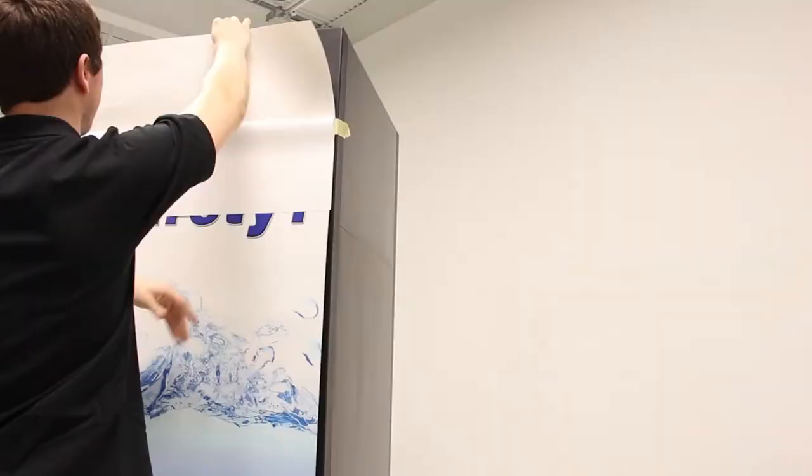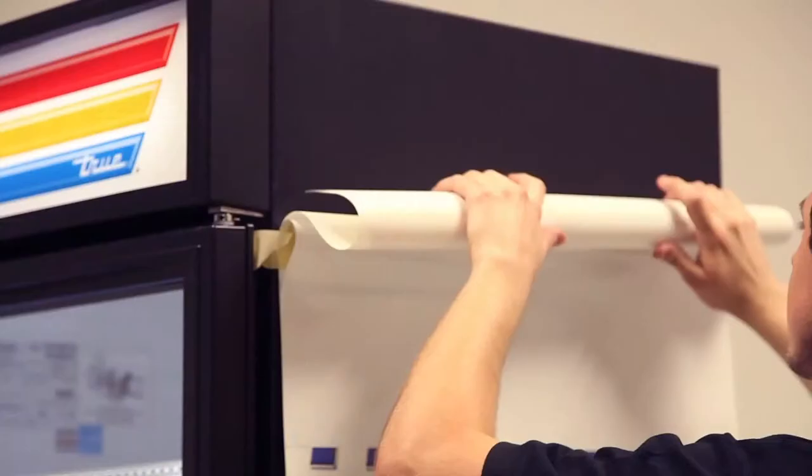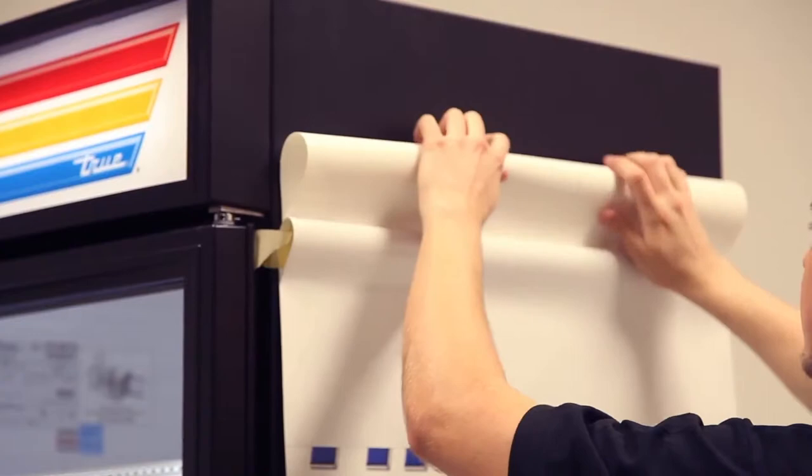Once aligned, peel the backing off the top of the decal, folding the backing flat against the cabinet.